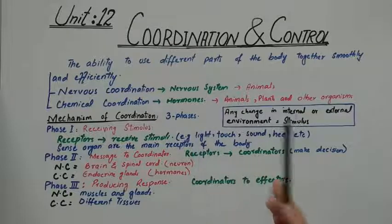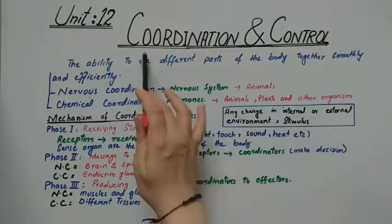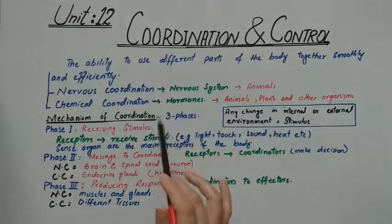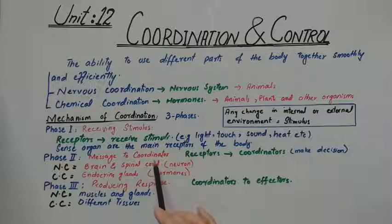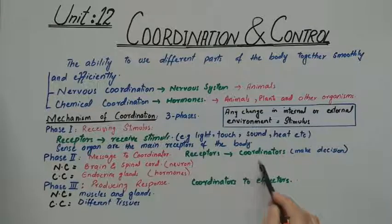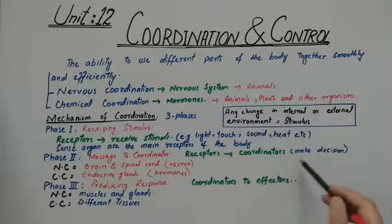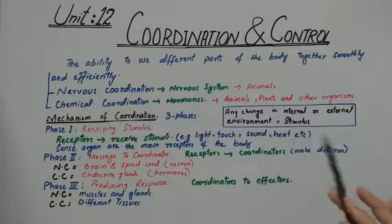Phase 2 is the message to the coordinators. The receptors will send the information about the stimulus to a coordinator. The coordinators will then analyze the signal, analyze the information, analyze the data, and make a decision.